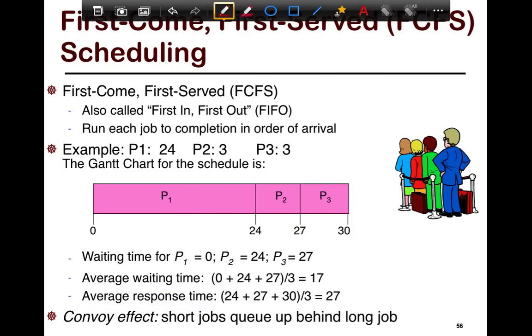If you want to calculate the average wait time is 17. If you want to calculate the average response time, then the question is when does the job finish? So the first job finishes at 24, the second job finishes at 27, the third job finishes at 30, and so the average response time is 27.